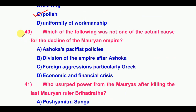Fortieth question: Which of the following was not one of the actual causes for the decline of the Mauryan Empire? The answer is option A: Ashoka's pacifist policies.